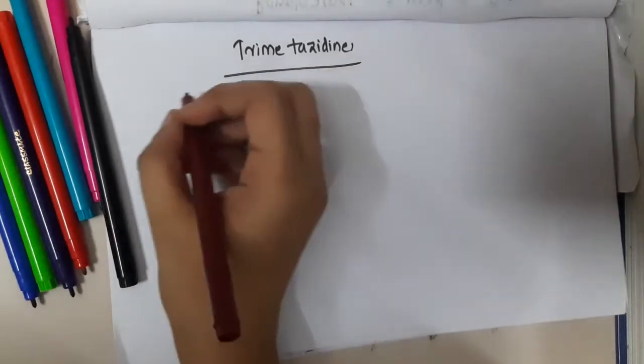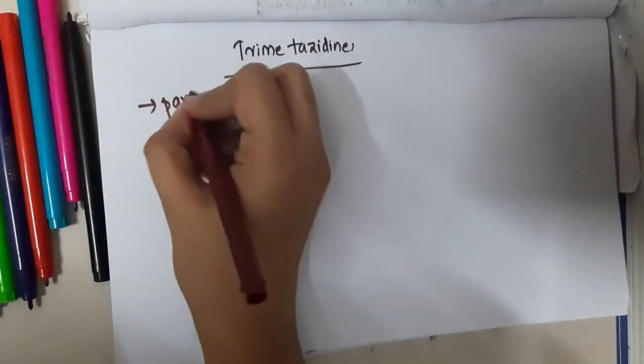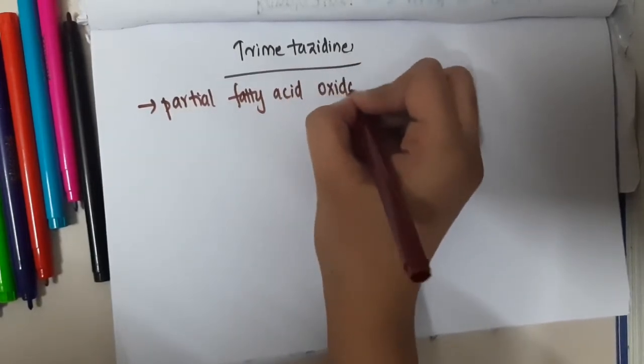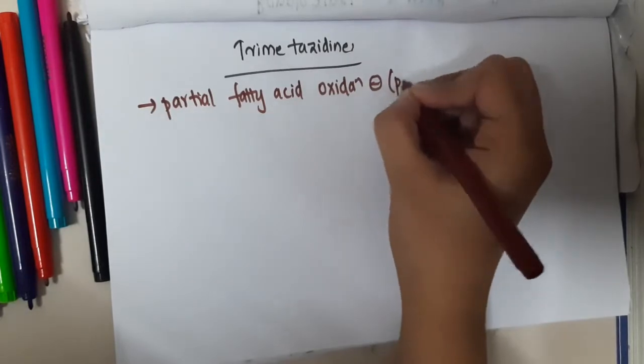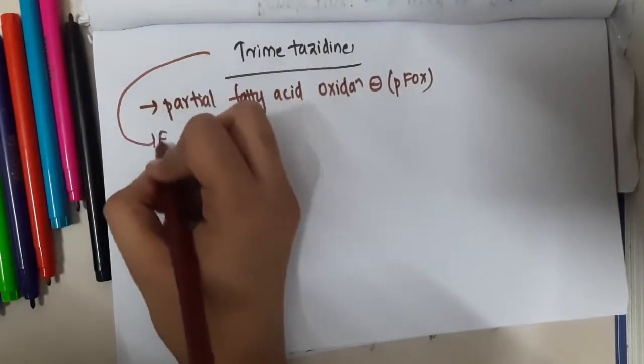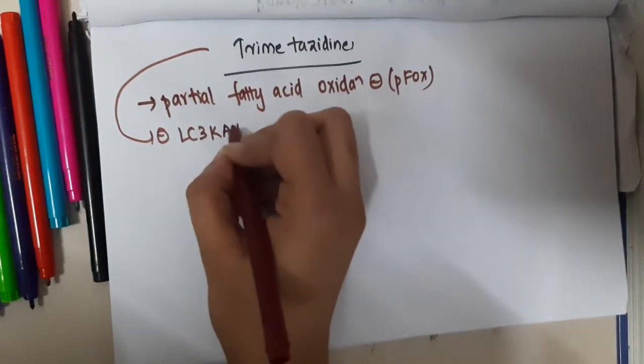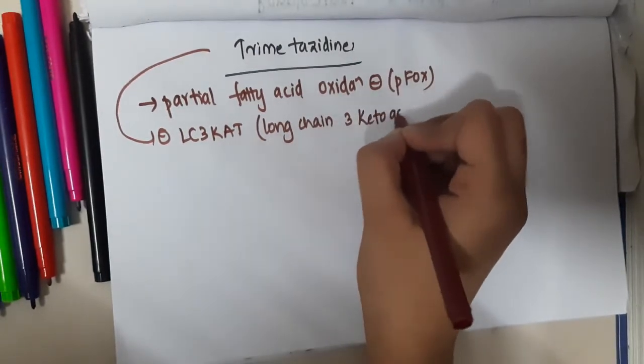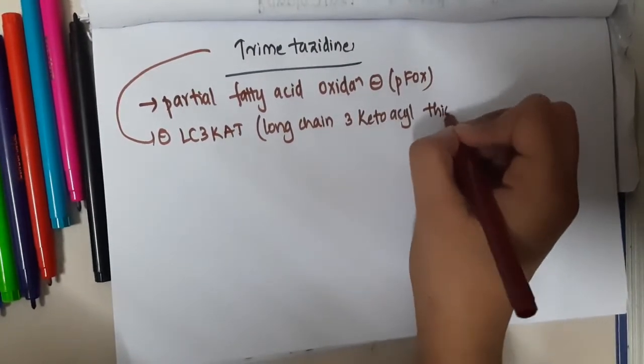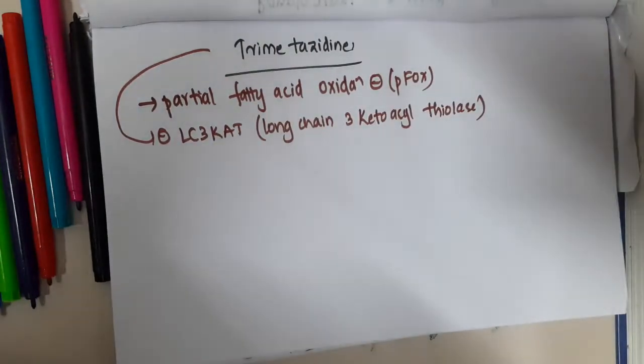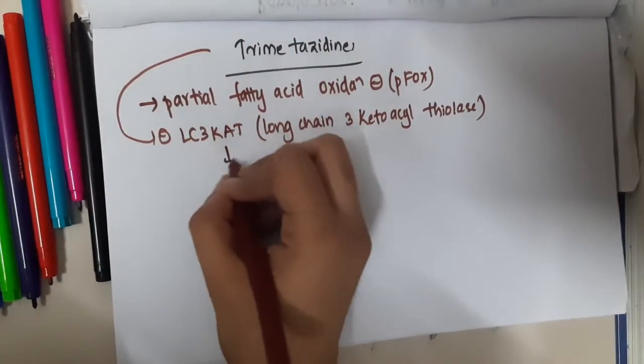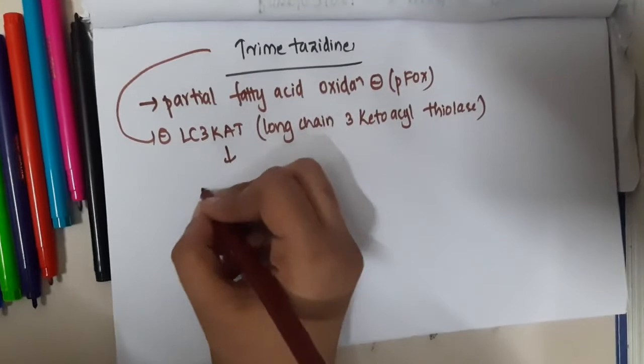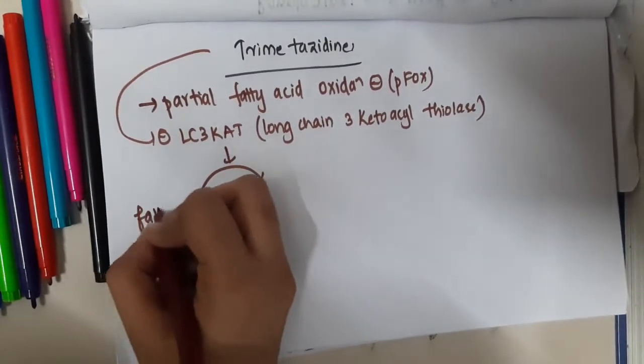Trimetazidine is a partial fatty acid oxidation inhibitor, or pFOX inhibitor. This trimetazidine will inhibit LC3KAT, which is long chain 3-ketoacyl thiolase. Once it is inhibited, there is no fatty acid oxidation.